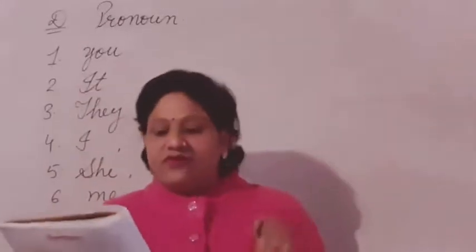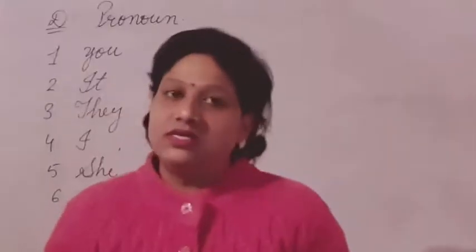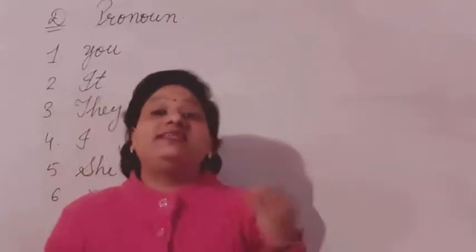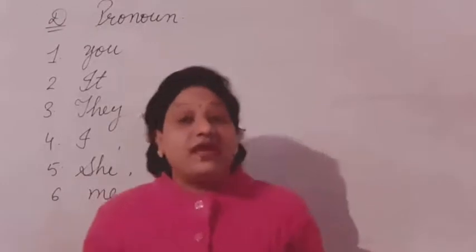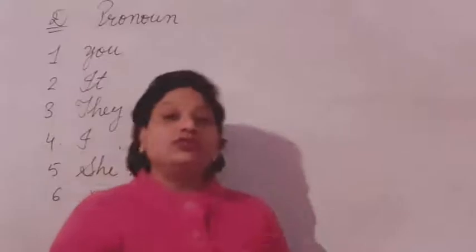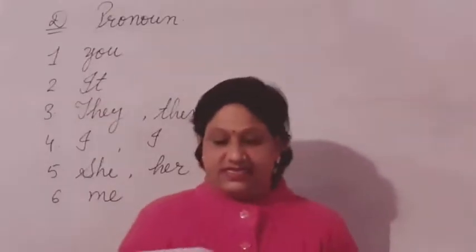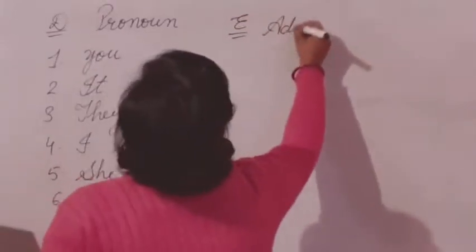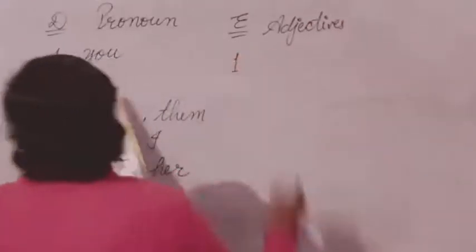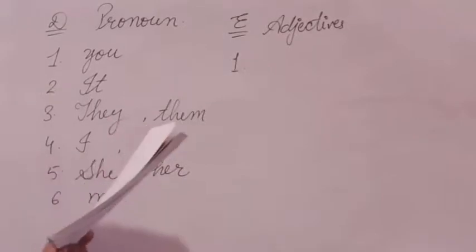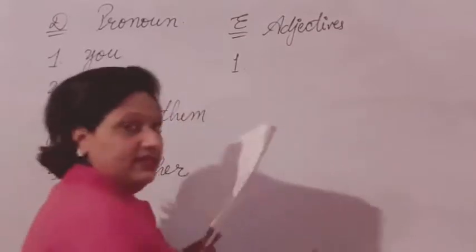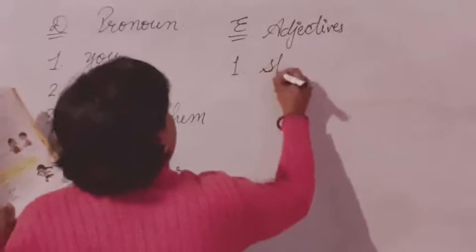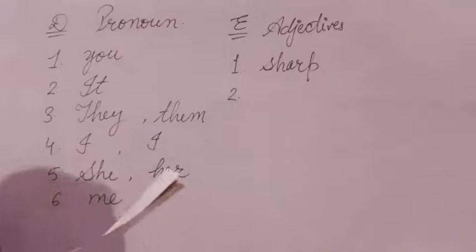Next is Exercise E: Fill in the blanks using adjectives from the box. Firstly, we should know what adjectives are. Adjectives are words that describe nouns and pronouns — they are describing words. We will choose the perfect describing word for each sentence. First: 'That is a blank knife. Use it carefully while you cut fruits.' The word that describes a knife here is 'sharp.' So we write 'sharp knife.'